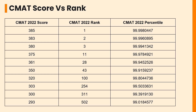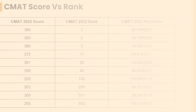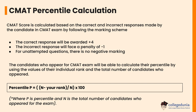Now let's discuss how to calculate the CMAT percentile. The CMAT score is calculated based on the correct and incorrect responses made by the candidate, following the marking scheme. A correct response is awarded +4 marks, an incorrect response faces a penalty of -1, and for unattempted questions there is no negative marking.